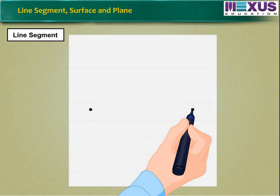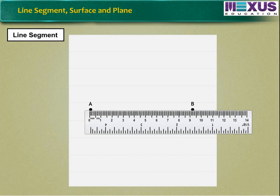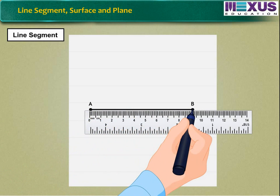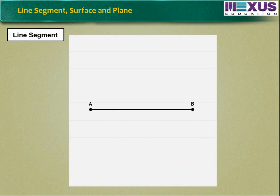That if we draw two points A and B on a paper and join them with ruler, we get a straight line with two distinct endpoints is said to be a line segment AB.